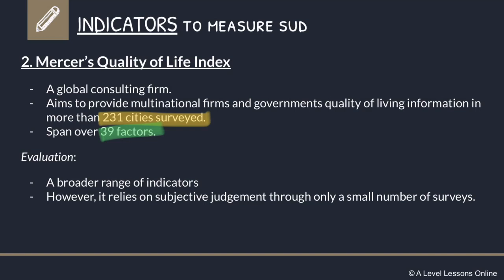For the evaluation: Mercer's covers a very broad range of indicators, which is a good thing. However, it does rely on subjective judgment because ultimately they are still a firm with their own motives. There is also a relatively small number of survey categories — although they cover over 231 cities, the number of factors and categories used is not actually that many. You'll notice later that the Lee Kuan Yew Public Policy Indicator has over 80 different indicators to measure quality of life.